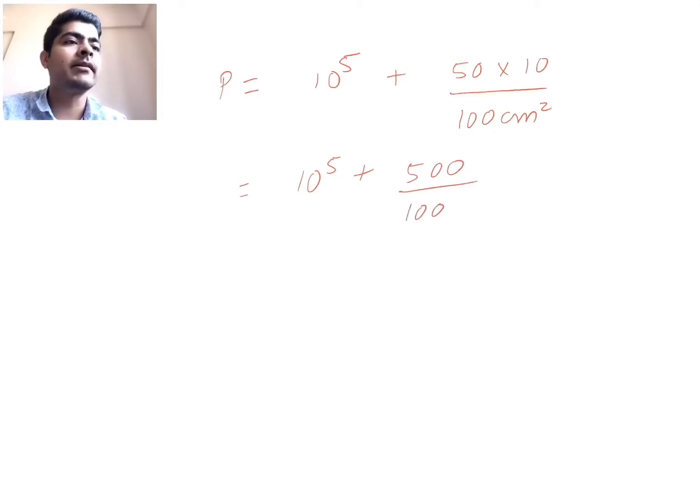Now we convert into SI units. So 10 power 5 plus 500 divided by 100 into cm squared is how much? 10 power minus 4 m squared. So we will get this to be equal to 10 power 5 plus 5 into 10 power 4. So this will be equal to, you could say, 1.5 into 10 power 5 Pascals.